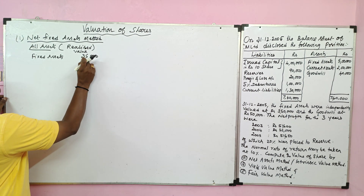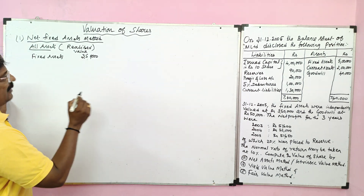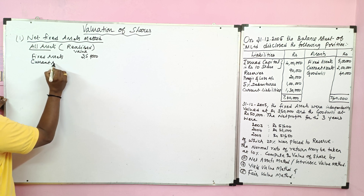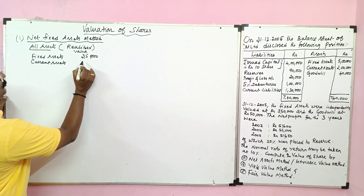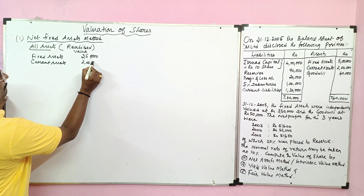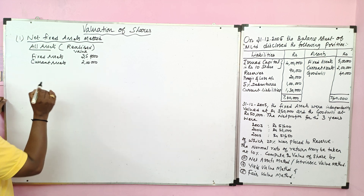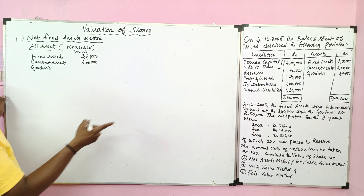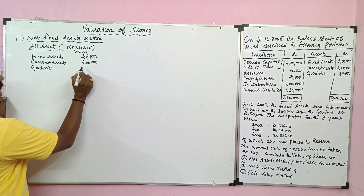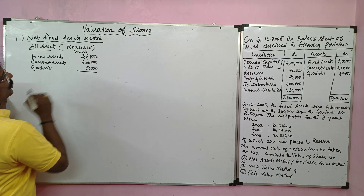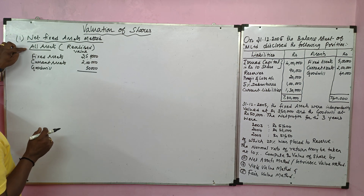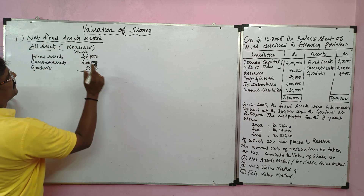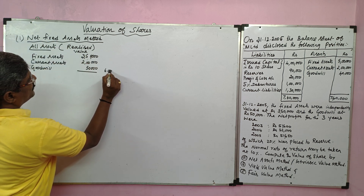Then current assets — as no realized value is given for current assets, we take the old book value of rupees 2 lakh. Then goodwill — old value 40,000, new value 50,000, so we take the new goodwill value of 50,000. Recording all assets at realized values, the total realized value of assets comes to 6 lakh.